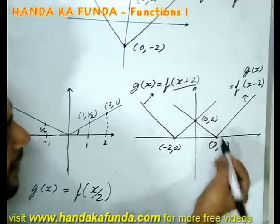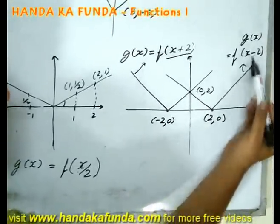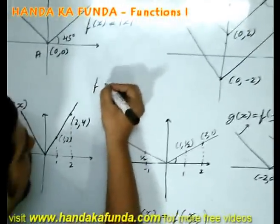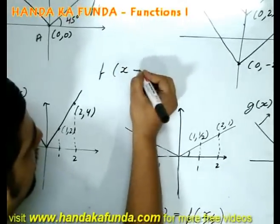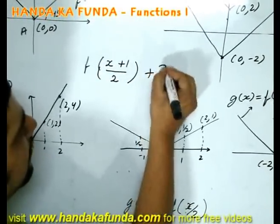So then I will get this point 2 comma 0. This will be my A if it is f of x minus 2. Just try and find out the graph for f of x plus 1 divided by 2 plus 3.